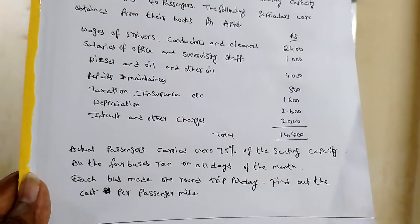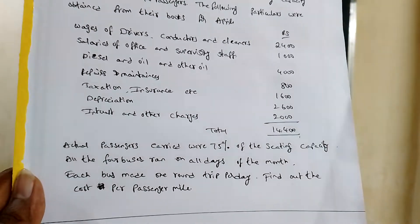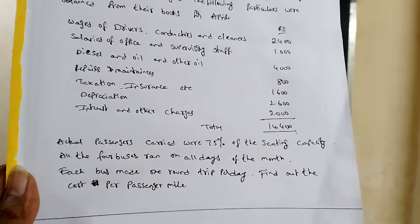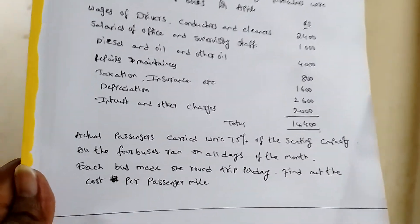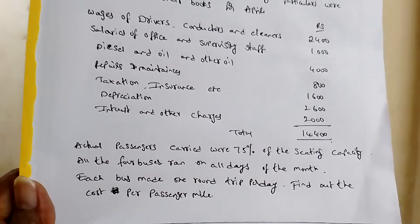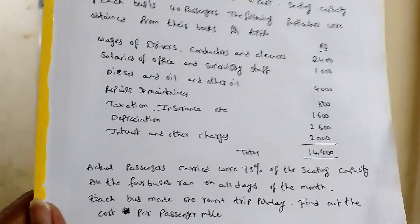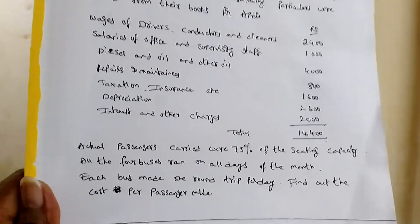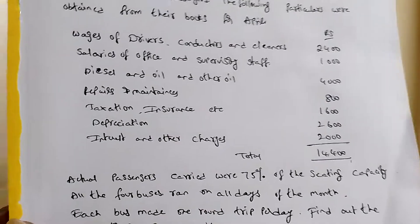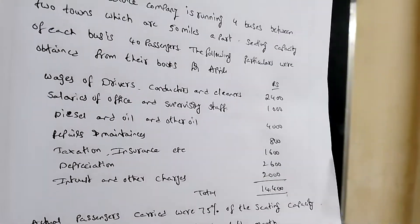Actual passenger capacity carried is 75 percent of the seating capacity. All the four buses ran on all days of the month. It means 30 days they run the bus. Each bus made one trip per day, so one trip per day means up and down, 50 into 2. Find out the cost per passenger mile.